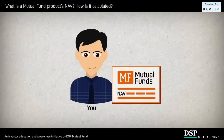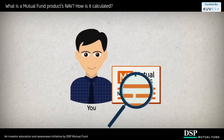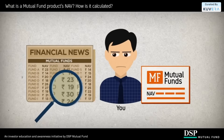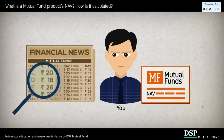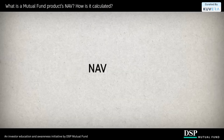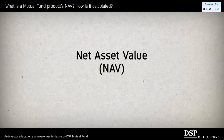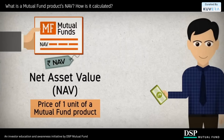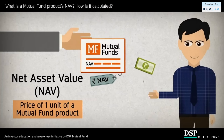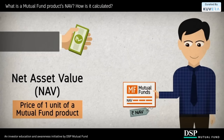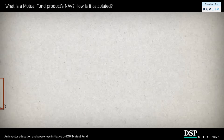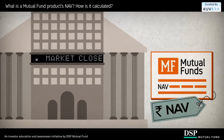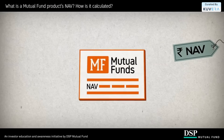If you've heard of mutual funds, you must have heard of the term NAV. Simply put, NAV or Net Asset Value is the price of one unit of a mutual fund product. An investor can buy and sell a unit of the mutual fund product at this price. The NAV of a mutual fund product is calculated at the end of each day.